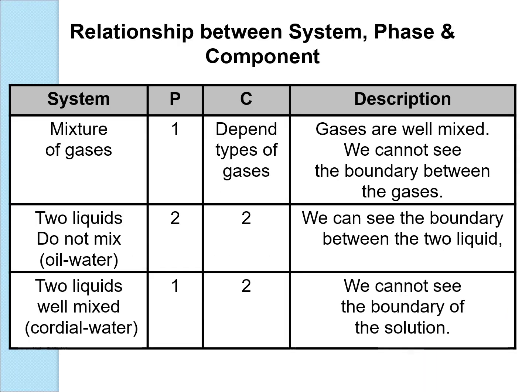Let's look at the relationship between system, phase, and component. For mixtures of gases, there is only one phase, and the number of components depends on the types of gases — we cannot see the boundary between the gases. For two immiscible liquids like oil and water, they are two phases and two components because we can see the boundary between them. For two totally miscible liquids, the phase is only one, but the components are two because we cannot see the boundary.